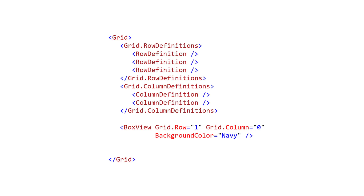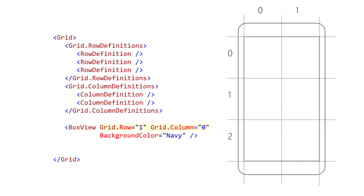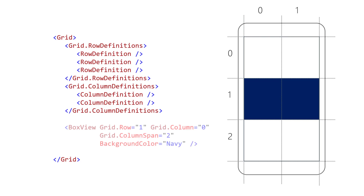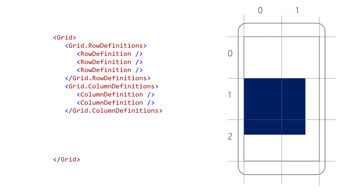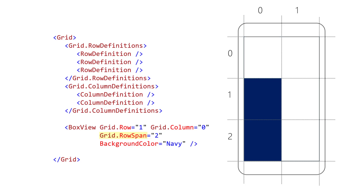This can be done either in code or XAML. Remember, the row and column numbering starts at zero. So here we place this box view in the first column of the second row. Once you have a child view in the proper cell, you can decide if you want to allocate it more space. A convenient way to do this is to give that child multiple cells instead of just one. Column span is the number of cells a child should occupy in the horizontal direction. To span multiple rows, we use row span. Here we're starting at the second row and spanning two rows.